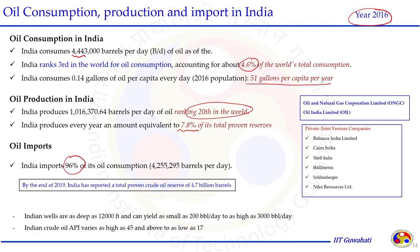Indian wells are as deep as 12,000 feet and can yield from 200 to 3,000 barrels per day. Indian crude oil has an API value in the range of 45 to 70. Two major public sector players in India — ONGC and OIL — are engaged in exploration and production to produce oil, identify new sites and find potential reserves. On the private side, Reliance, Cairns, Shell, Halliburton, Schlumberger and many more players are actively looking at different sites to find hydrocarbon reserves, which may increase India's proven and potential reserves.